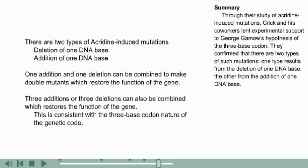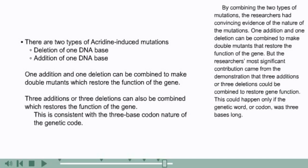Through their study of acridine-induced mutations, Crick and his co-workers lent experimental support to George Gamow's hypothesis of the three-base codon. They confirmed that there are two types of such mutations: one type results from the deletion of one DNA base, the other from the addition of one DNA base. By combining the two types of mutations, the researchers had convincing evidence of the nature of the mutations. One addition and one deletion can be combined to make double mutants that restore the function of the gene. Most significantly, the demonstration that three additions or three deletions could be combined to restore gene function proved that the genetic word, or codon, was three bases long.